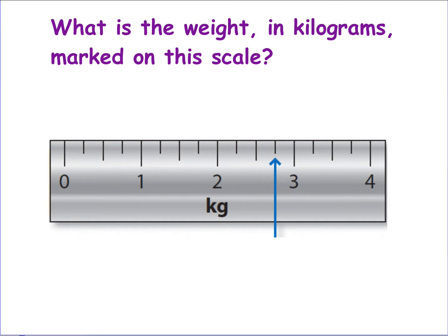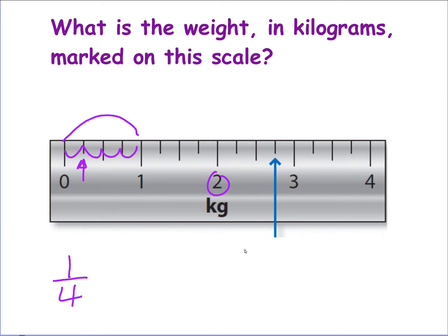For weight scales, count the big units and divide by the number of steps to find each step's value. If I've got a gap of 1 divided by 4 steps, each small step is worth a quarter. My arrow is pointing at 2 whole and 3 quarters, so it's 2 and three-quarter kilograms.